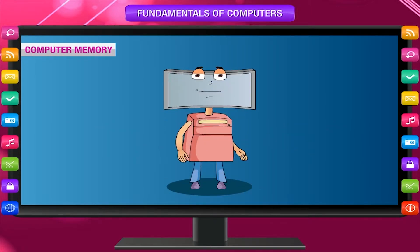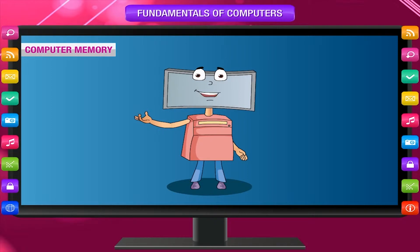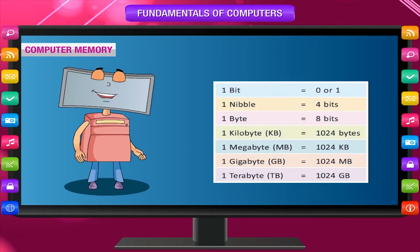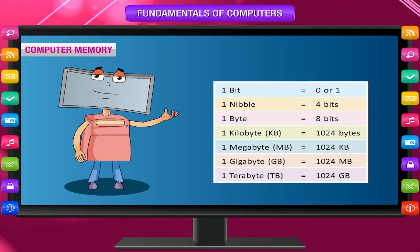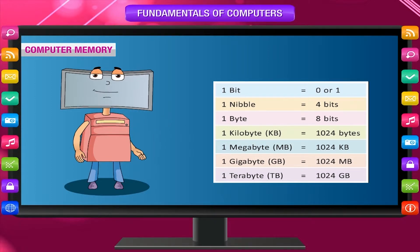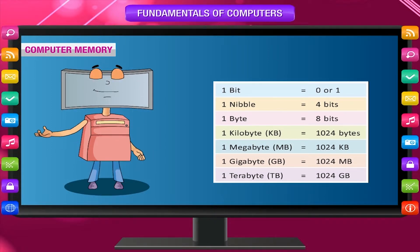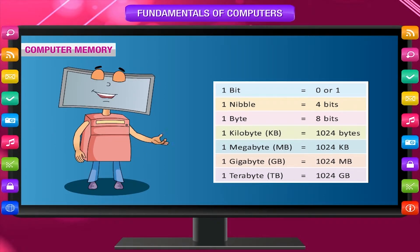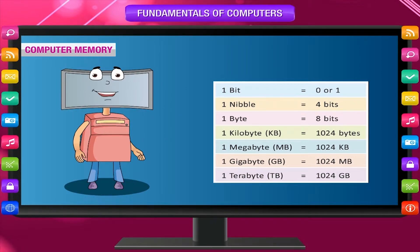Computer memory is measured in terms of bytes. One byte is capable of holding one character. Each piece of information is represented within the computer memory using binary digits 0 and 1, called a bit.